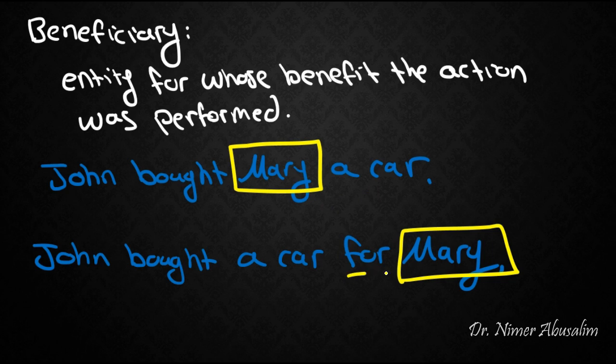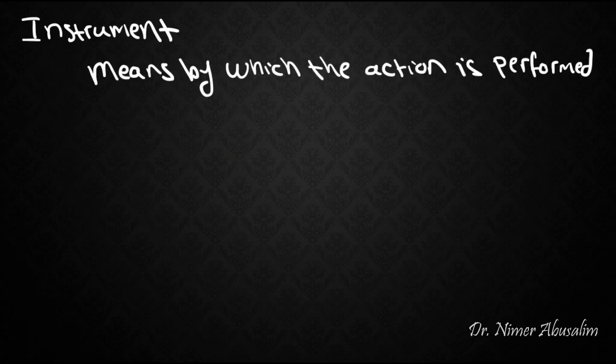Oftentimes you can know that a certain DP is a beneficiary by trying to play a bit around with the words and see if you can get this 'for' here. This 'for' indicates that there's a certain action that has been done for the benefit of this DP, in this case Mary. That way we know that Mary is a beneficiary.